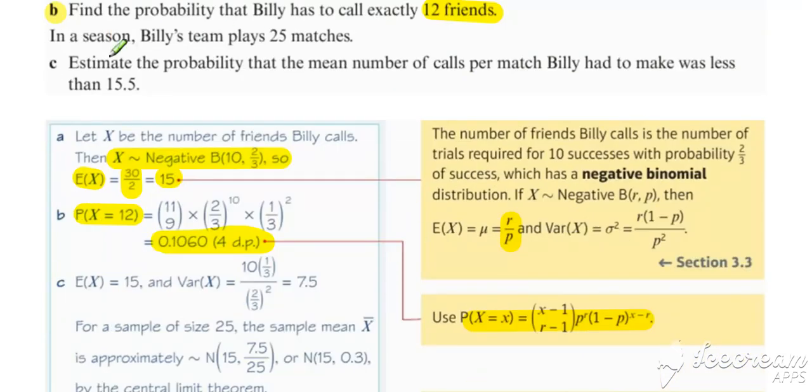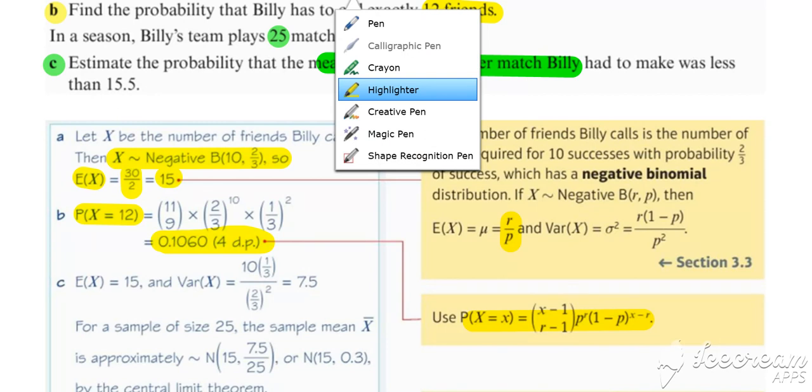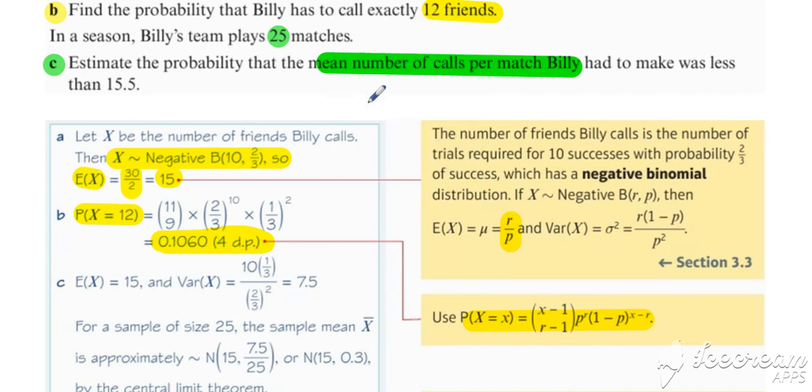In Part C, the emphasis changes—notice the telltale signs. In a season, Billy's team plays 25 matches. Estimate the probability that the mean number of calls per match Billy has to make is less than 15.5. The emphasis has changed—it's now on the mean number of calls, so we're considering the distribution of X-bar.